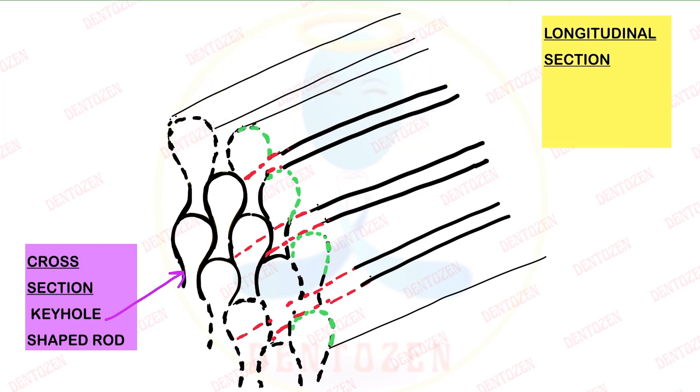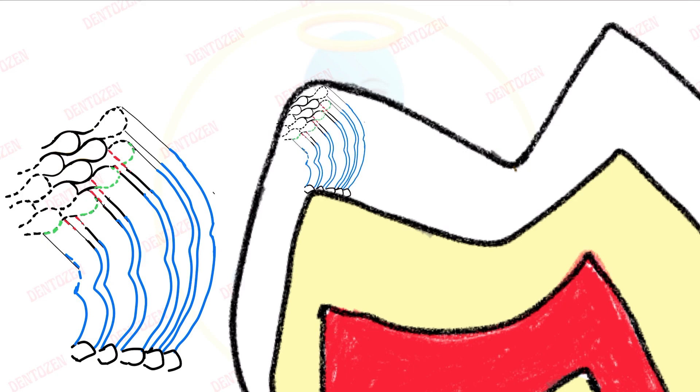If we extend the cross section with the longitudinal section: in the cross section they give keyhole shape, and in the longitudinal section they give alternating bodies and tails. If we try to understand how rods are placed inside the enamel, enamel rods are cylindrical but they run a wavy course. Drawing one row of enamel rods in three-dimensional view, one end of the row is towards the dentinoenamel junction and the other end is towards the enamel surface.